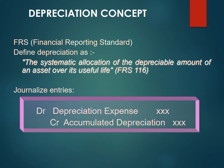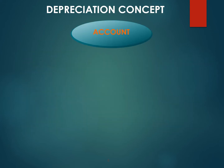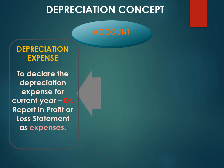We will record it as debit depreciation expense and credit accumulated depreciation. There are two accounts involved in recording the depreciation. Depreciation expense is to declare the depreciation expense for the current year, so we debit it and report it in the profit or loss statement as an expense.